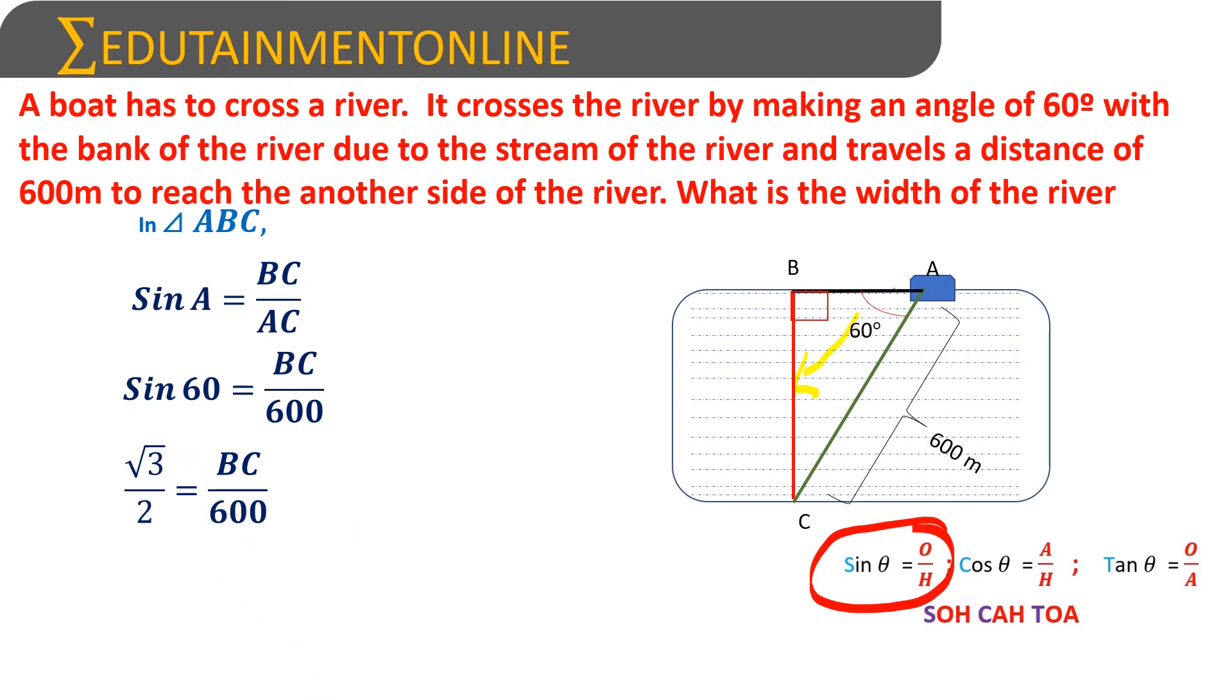So 2, 1 times 2, 300 times... so BC equals 300 root 3. This is the width of the river.